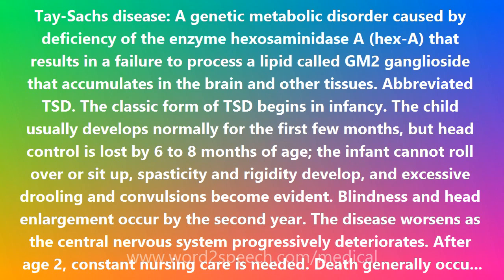TSD was once called amaurotic familial idiocy, a term to avoid. Today it is also known as type 1 GM2 gangliosidosis, B variant GM2 gangliosidosis, hexosaminidase A deficiency, and Hex A deficiency. See also: Sandhoff disease.